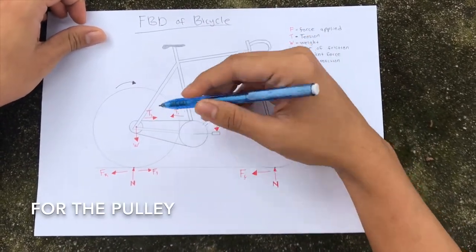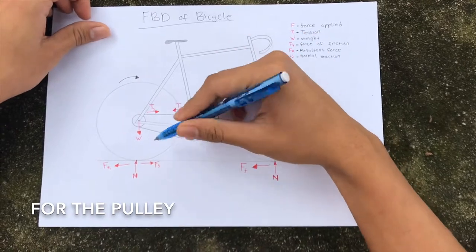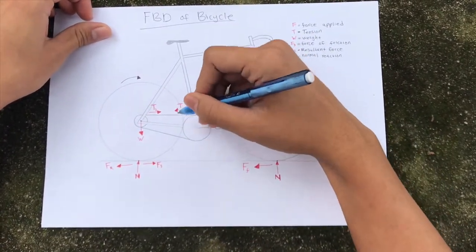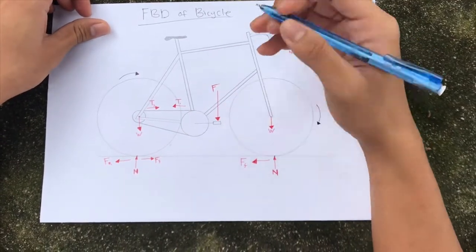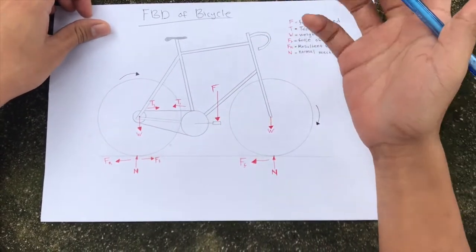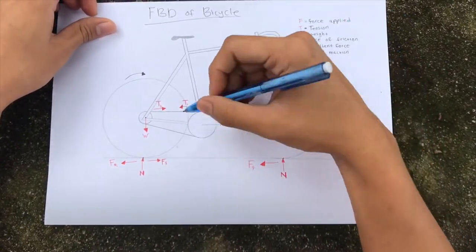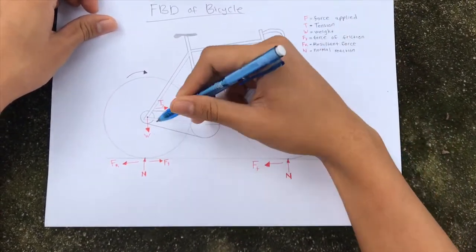Now tension will occur in order for the chain to revolve within the sprocket. The sprocket and the chain act as a pulley system which means the pulley is used to change the direction of the force. Because the force applied is vertical, it will now be moving horizontally within this area.